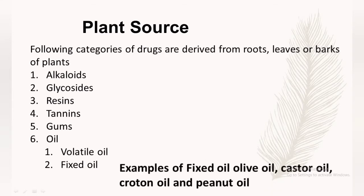Fixed oils are those which do not evaporate at room temperature. They are in liquid viscous form and are obtained from seeds by pressing or squeezing under high pressure. They are not volatile and leave a greasy stain on evaporation. They have caloric as well as food value. They are used to form salts with alkalis and become rancid — meaning they develop a foul smell — after keeping for a long time. Examples are olive oil, castor oil, croton oil, and peanut oil.